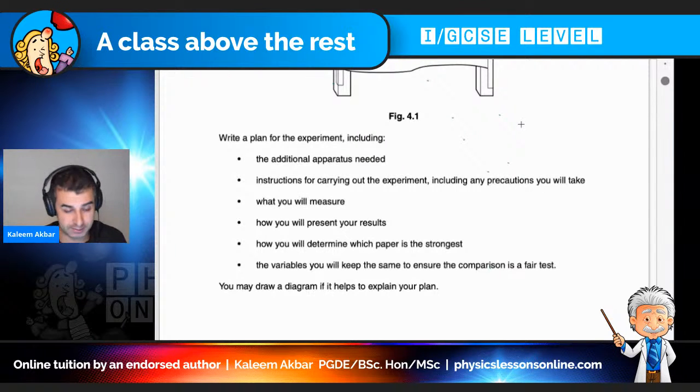The additional apparatus needed. Instructions for carrying out the experiment, including any precautions you will take. What you will measure. How you will present your results. How you will determine which paper is the strongest. And the variables you will keep the same to ensure the comparison is a fair test. Now, like I said, when you look at this and you look at the number of lines, it can seem daunting. But if you will take each bullet point in isolation, I think you'll find it a lot easier. Now, the answer that I'm about to give you, I am not saying this is the only answer that there is. But what I try to do for my students is make it as simple as I can possibly make it.